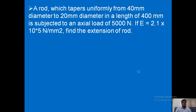Now, seeing the question — all of you note down the question. A rod which tapers uniformly from 40 mm diameter to 20 mm diameter in a length of 400 mm is subjected to an axial load of 5000 Newton. If Young's modulus E equals 2.1 × 10⁵ N/mm², find the extension of the rod.